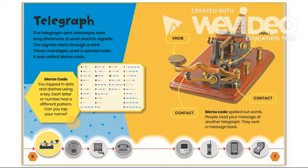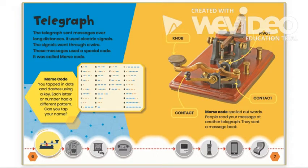Telegraph: The telegraph sent messages over long distances. It used electric signals. The signals went through a wire. These messages used a special code called Morse code. You tapped in dots and dashes using a key. Each letter or number had a different pattern. Morse code spelled out words. People read your messages at another telegraph and sent a message back. So the telegraph was kind of like texting, because you were sending messages over a long distance.